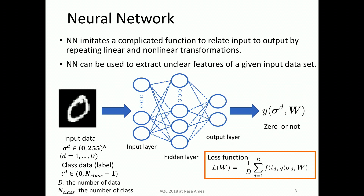A neural network imitates a complicated function to relate input to output by repeating linear or nonlinear transformation. For example, this is the MNIST dataset. This dataset consists of an input vector and the class data. D is the number of data and N_class is the number of classes. Neural network predicts the label of the input data and calculates the loss function between prediction and the label. To minimize the loss function, we update the parameter with this rule.